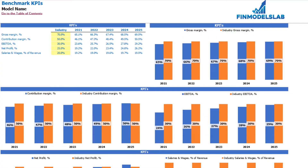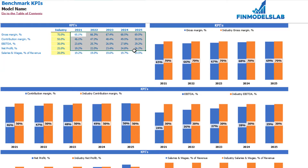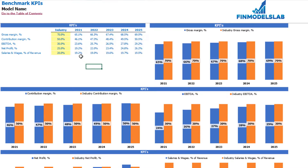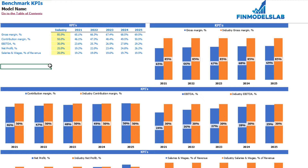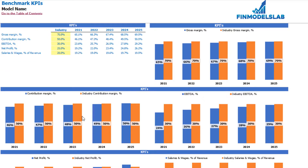On the benchmarks KPI tab you may compare your financial outputs with your industry benchmarks. You have 5 different benchmarks: gross margin, contribution margin, net profit, EBITDA, and salaries and wages as a percentage of revenue. In these cells you may see the values produced by the model after you set up all the drivers. In the yellow cells you can set up your industry benchmarks — for example, gross margin for your industry and country is 85%. Below you may see the same information in graphical form, and as orange columns you may see the industry values.